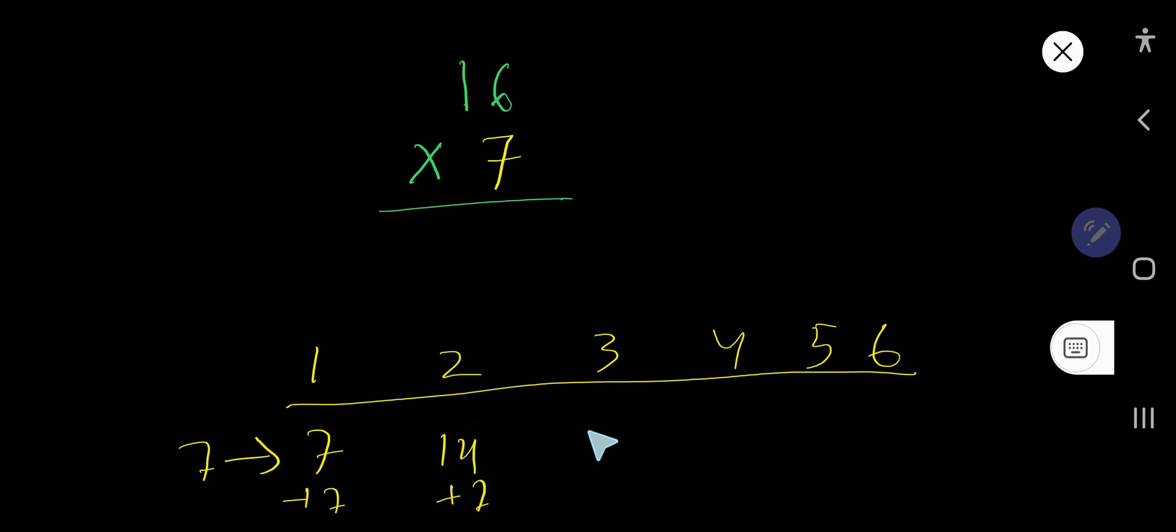7 times 4 equal to what? Just add 7, that is 28. 7 times 5, just add 7, 35, right? Just 28 plus 7, 35. 7 times 6 equal to what?